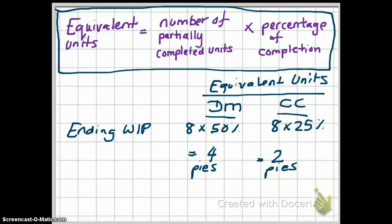So if you were asked to calculate your equivalent units, these 8 pies equal 4 equivalent pies for direct materials and 2 equivalent pies for conversion costs.